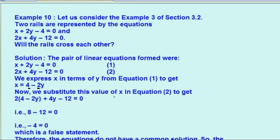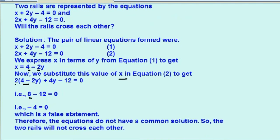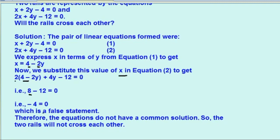Now we substitute the value of x in equation 2. तो 2 into (4 minus 2y) plus 4y minus 12 equals to 0. अब 2 into 4 हो जाएगा 8, 2 into minus 2y minus 4y और यहाँ पर है minus 12. अब minus 4y plus 4y cut हो जाएंगे, तो बचेगा 8 minus 12 equals to 0, which is a false statement. क्योंकि minus 4 equals to 0 नहीं होता. So we can say that the equations do not have a common solution.